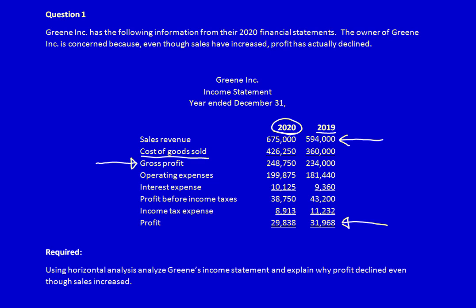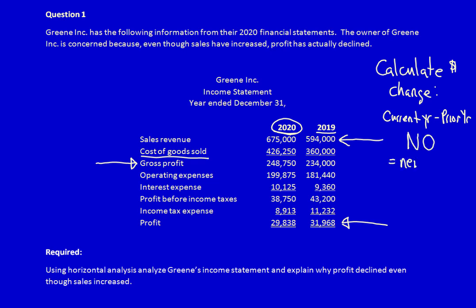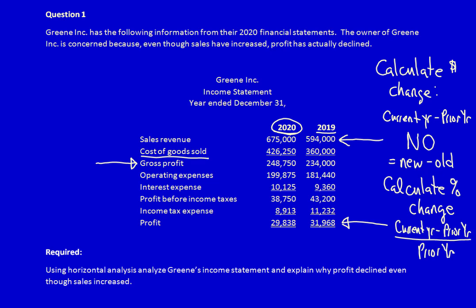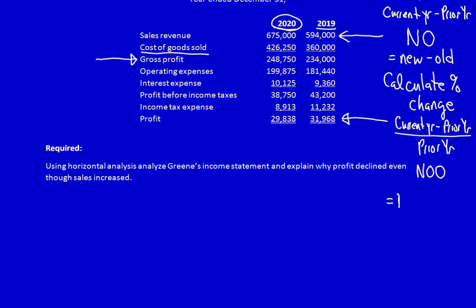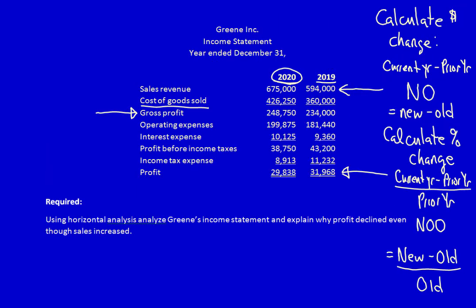For horizontal analysis, we want to calculate both the dollar change and the percentage change between two years. To calculate the dollar change, the formula is: current year minus prior year. A memory aid is the word NO — New minus Old. To calculate the percentage change, we adjust the formula: new minus old, divided by old. We call that NOO — New minus Old, divided by Old. These are the two formulas we need: NO for dollar change and NOO for percentage change.